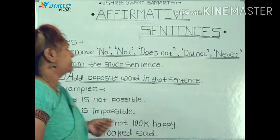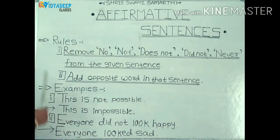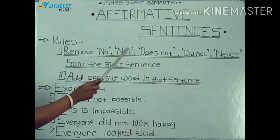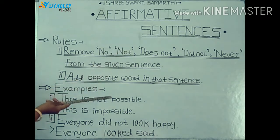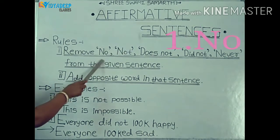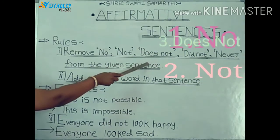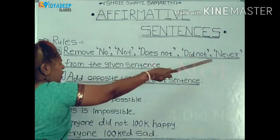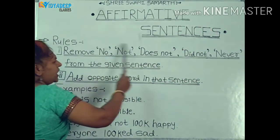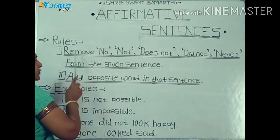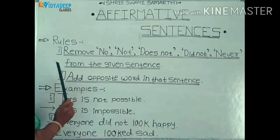There are some rules. The first rule is to remove negative words. No, not, does not, did not, never — all are negative words. First, we remove them from the sentence.